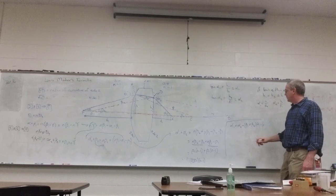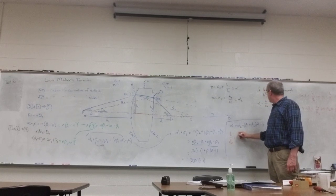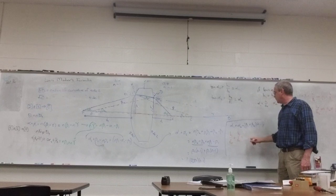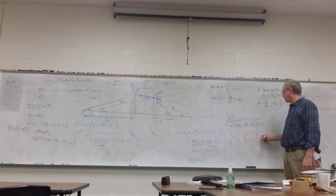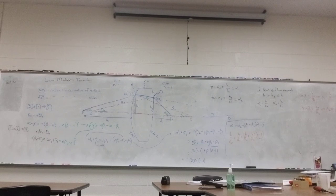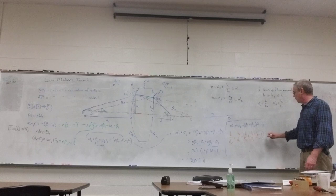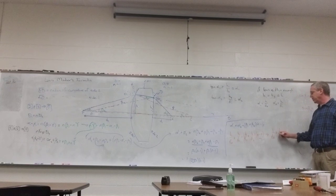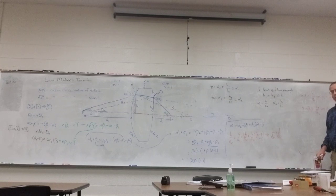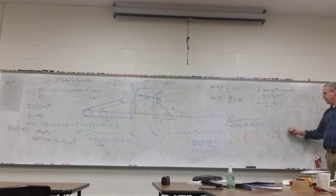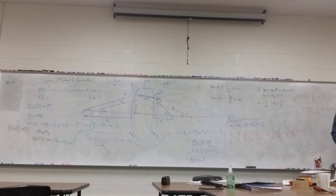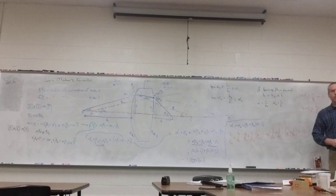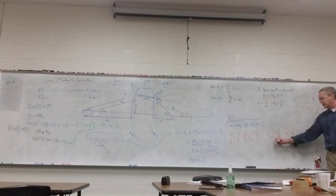So I have H over the object distance plus H over the image distance equals H over R1 plus H over R2 times n minus 1. Every term is going to have an H if we multiply it all out, so H goes away. What we are fondly left with in the end is 1 over the object distance plus 1 over the image distance. Now, if we're dealing with focal length, that would be equal to 1 over the focal length. That's equal to 1 over R1 plus 1 over R2 times n minus 1. And that is the lens-maker's equation. The only difference between this and the book version is the book uses P for the object distance and Q for the image distance.